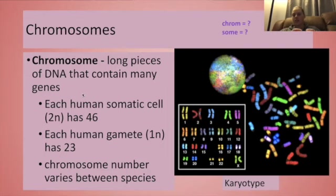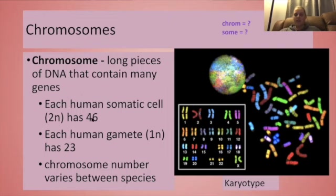Chromosomes are structures that contain the genes, the traits that are going to be passed down to the future offspring. They are long pieces of DNA coding for many proteins. I think of chromosomes like suitcases — the bigger the suitcase, the more genes it will fit. The bigger the chromosome, the more of this type of gene it will fit. So human somatic cells, our body cells, contain 46 total chromosomes and two sets — one set that we got from mom and one set that we got from dad.